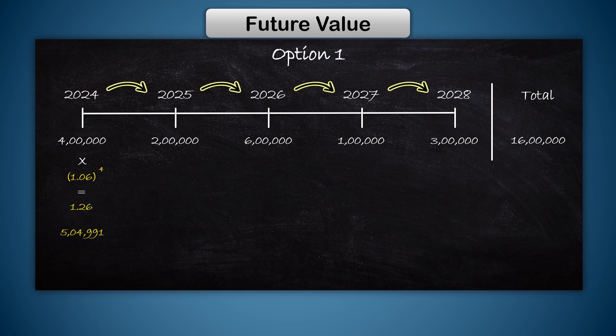This 5 lakh 5,000 means that if I invest 4 lakh at 6 percent per annum for four years, it will become 5 lakh 5,000 in 2028. Similarly, I can find the future value for the other amounts.